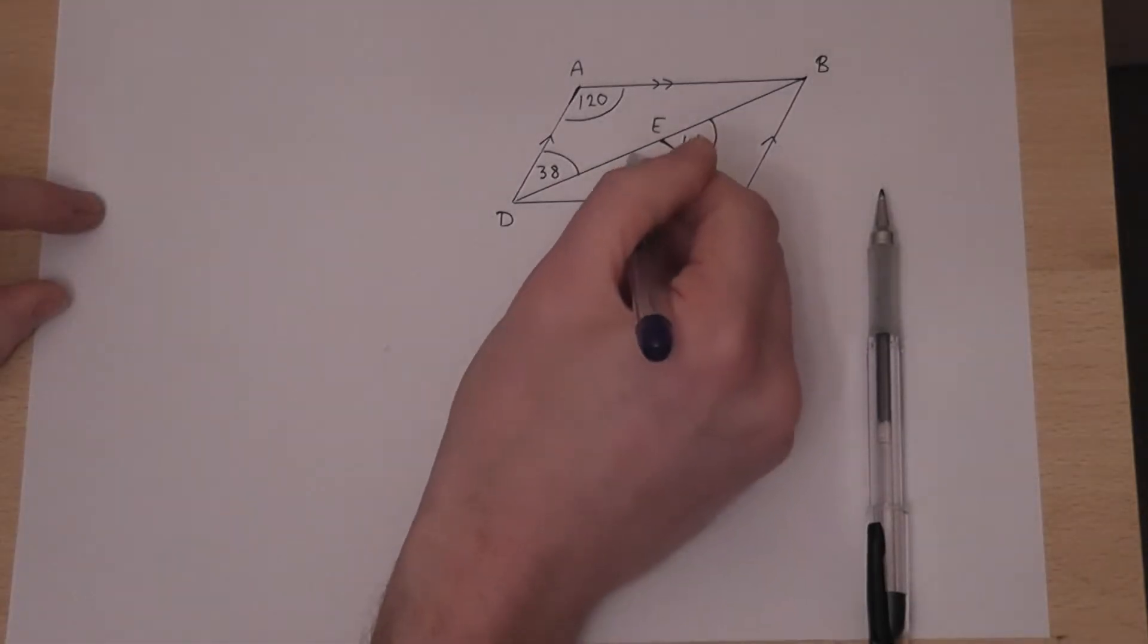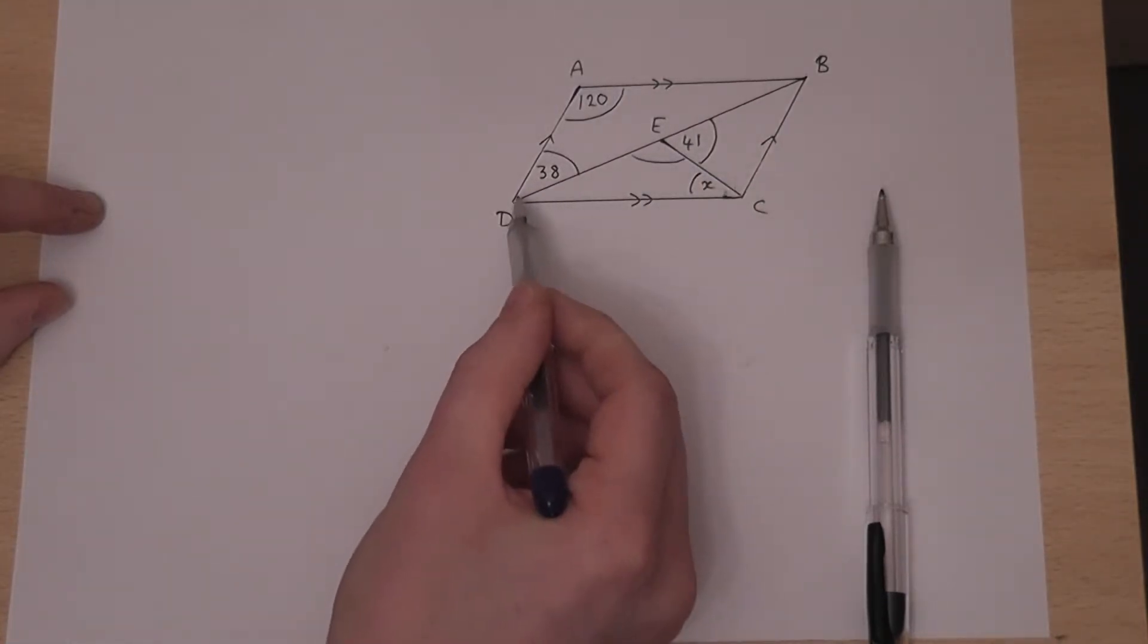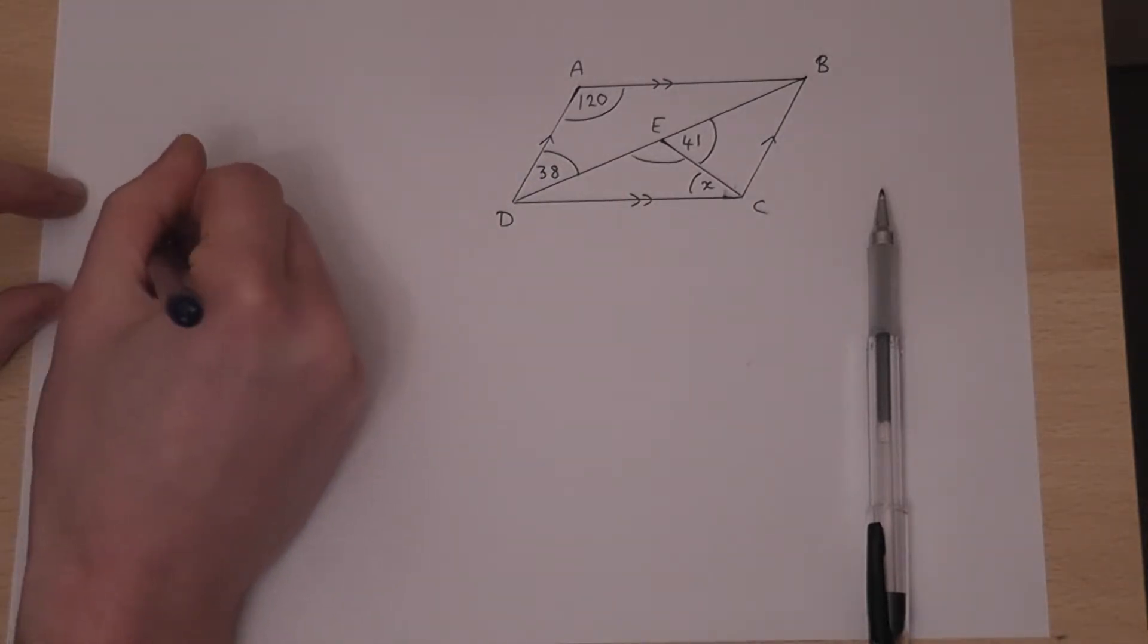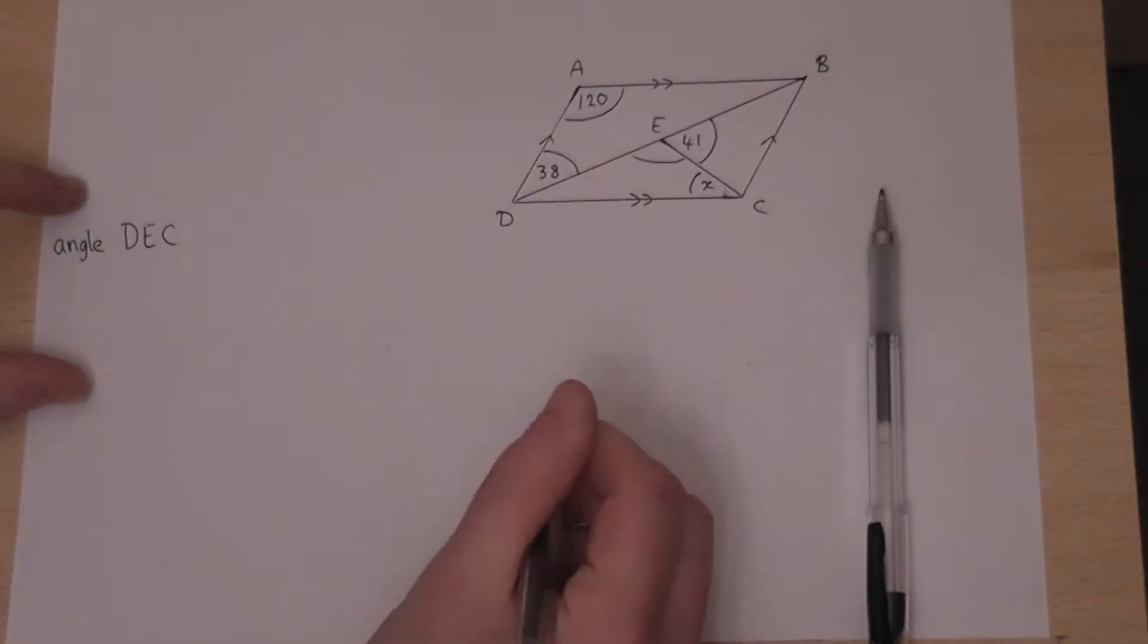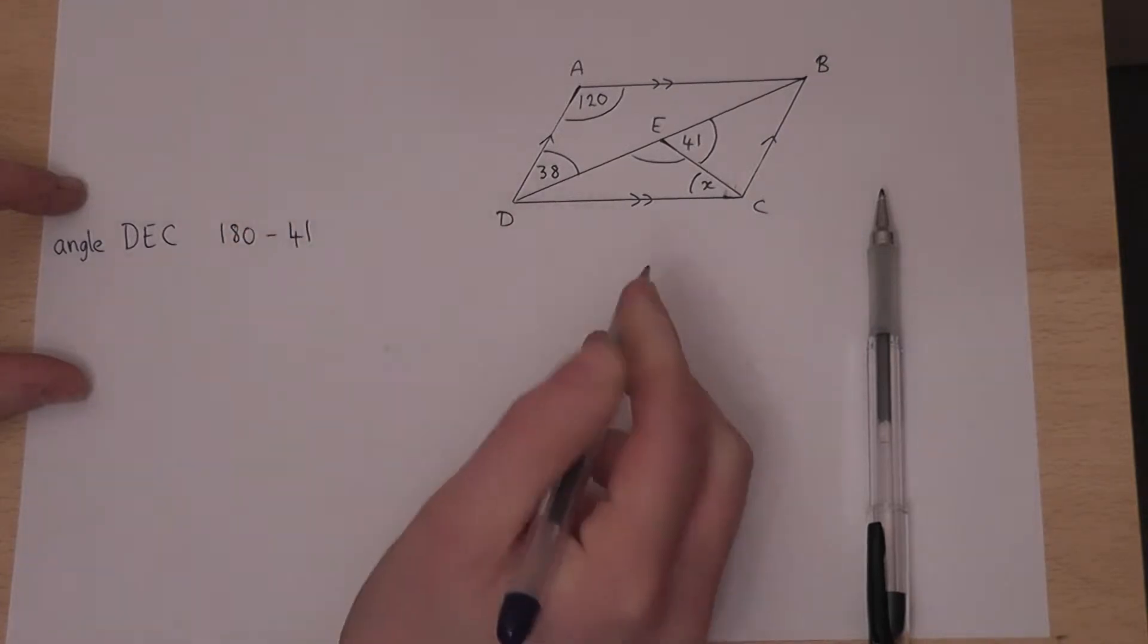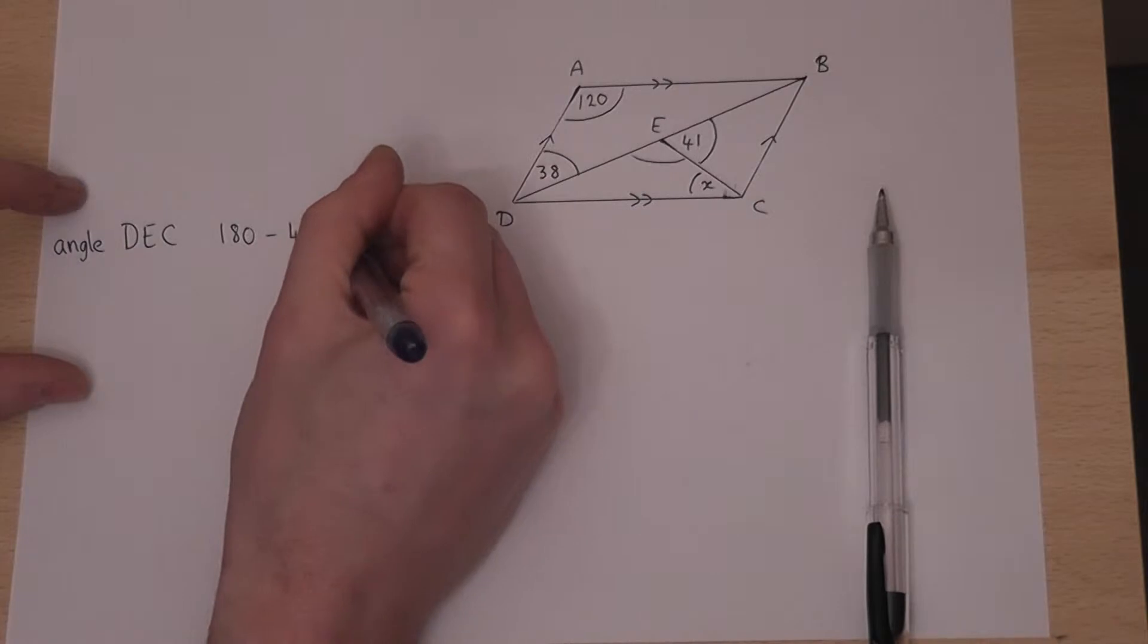First of all, I can find this angle here quite easily, because there's a straight line there. So I can find angle DEC. Angle DEC must be 180 minus 41, and 180 minus 41 is 139 degrees.